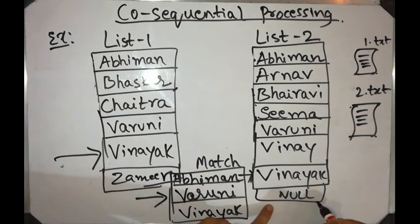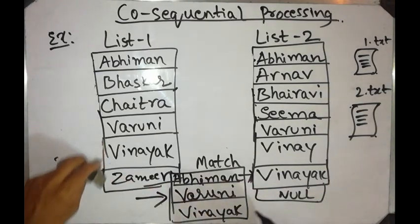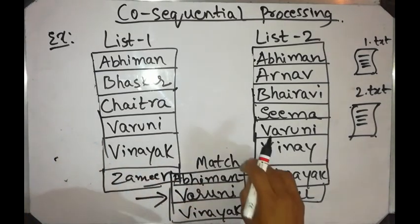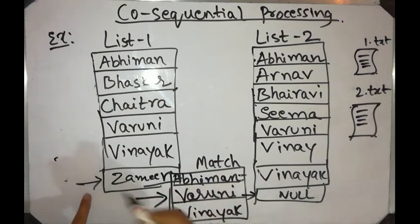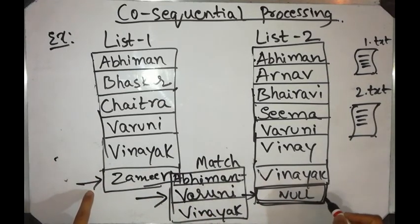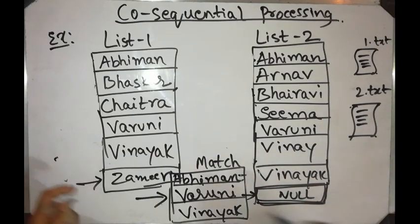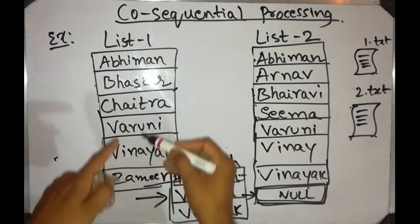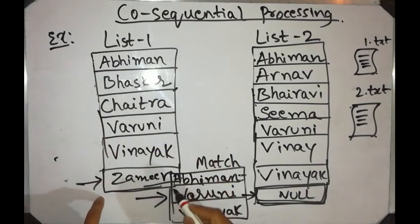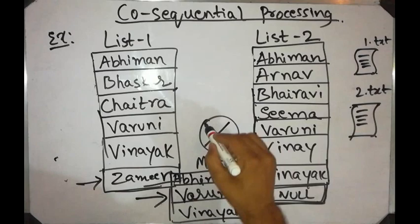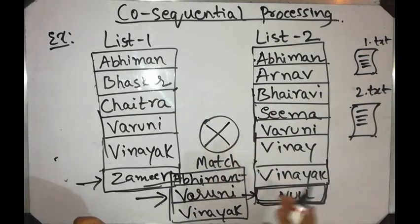Once list two becomes null — that is, it has ended — even though we may have more names in list one, we stop the co-sequential process because there is nothing to compare in the other list.